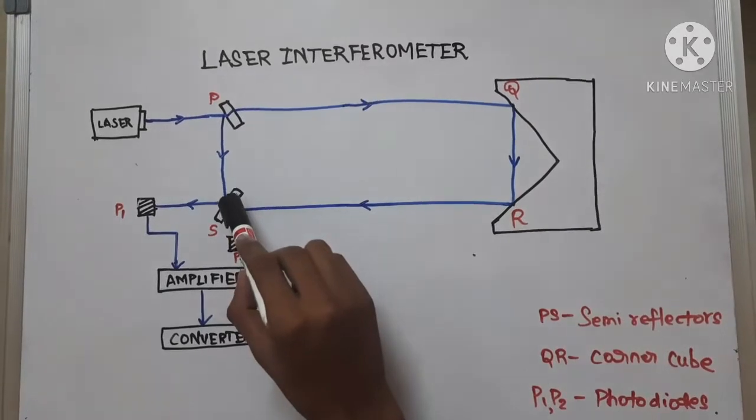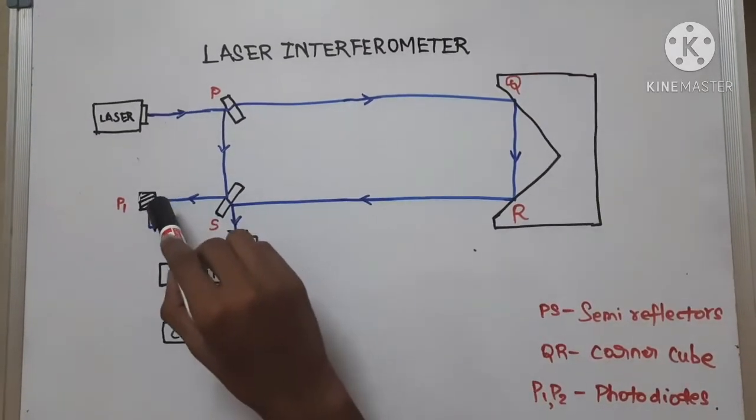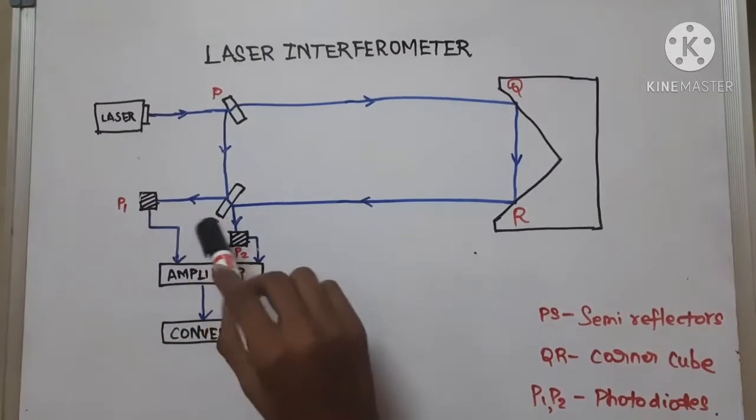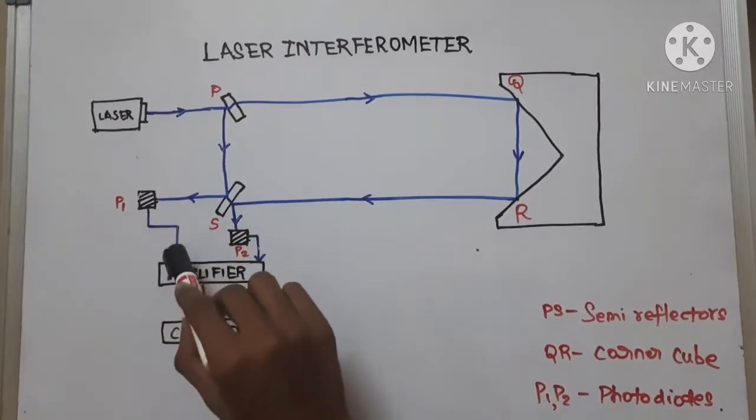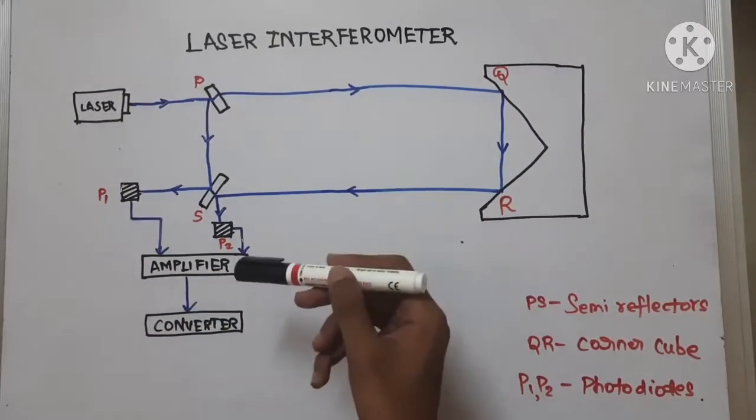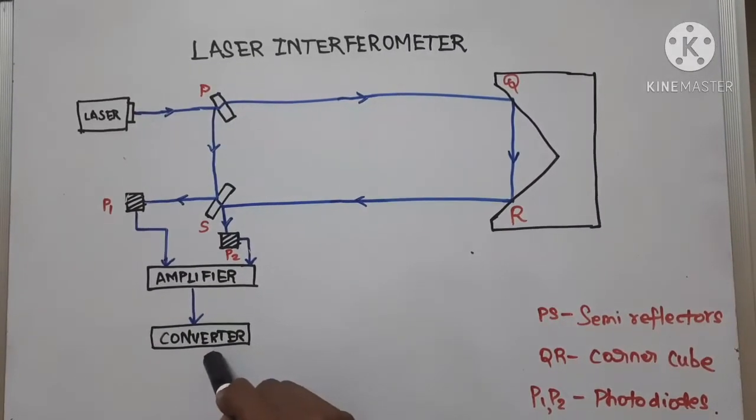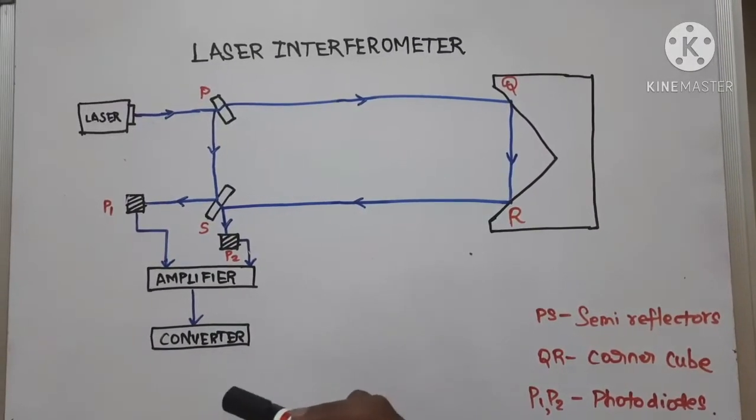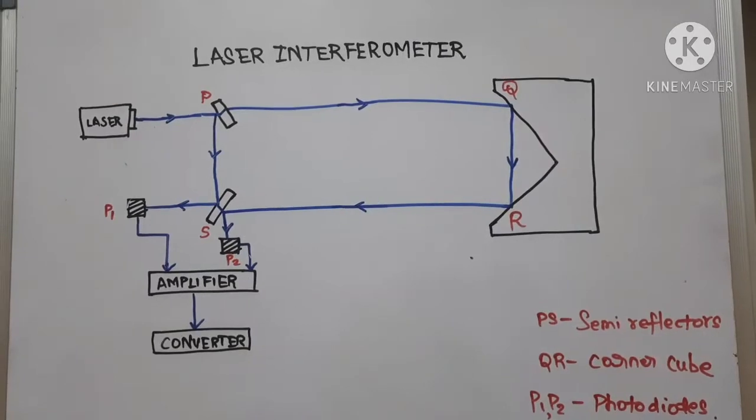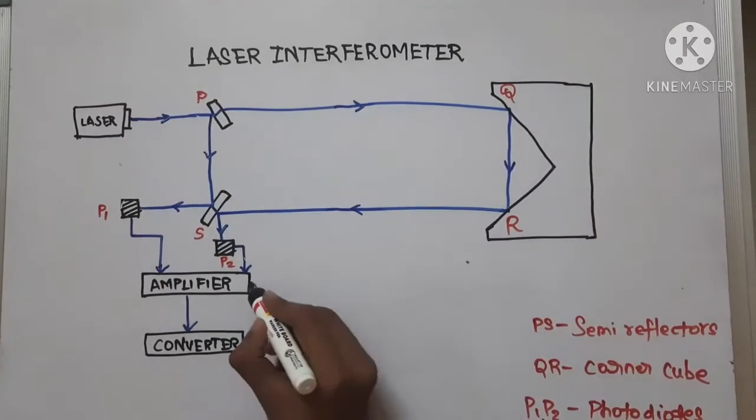And a part of light again passes through this plate and hits the photodiode P1. So these two photodiodes are connected to the amplifier which amplifies the signal and that signal gets received by the converter which measures the fringes. And the amplifier gives this to an output.